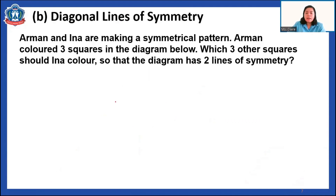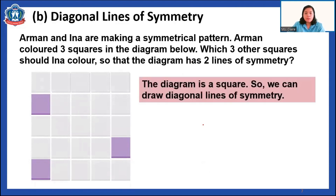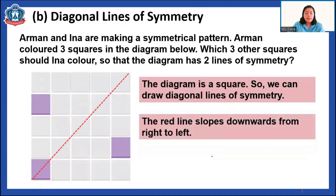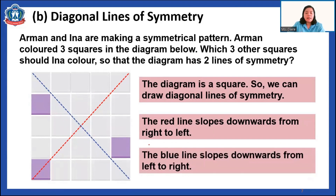Now let's look at diagonal lines of symmetry. Arman and Ina are making a symmetrical pattern. Arman colored three squares in the diagram. Which three squares should be colored so that the diagram has two lines of symmetry? Since this diagram is a square, we can draw diagonal lines of symmetry. The red line slopes downwards from right to left, and the blue line slopes downwards from left to right.